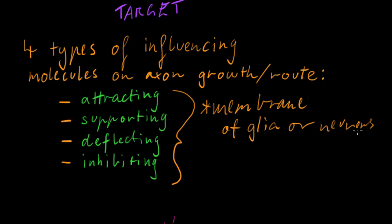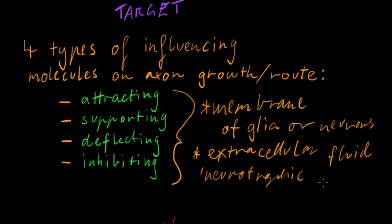And that's embryonic neurons. They can also be found in the extracellular fluid as what we call neurotrophic factors.